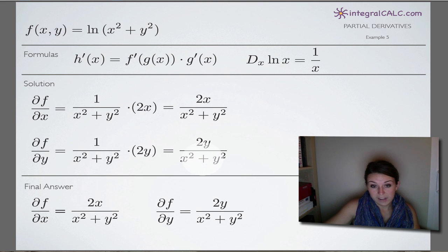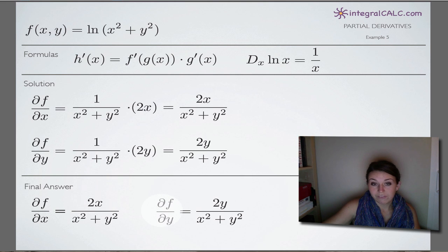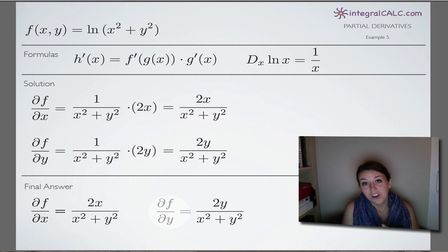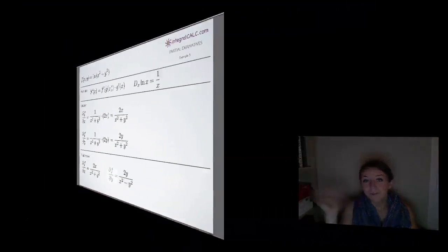So we simplify to get our final answer. We've taken the partial derivative of f with respect to x — which is 2x over (x squared plus y squared) — and the partial derivative of f with respect to y — which is 2y over (x squared plus y squared). So that's it. I hope it helped, and I will see you guys next time. Bye!